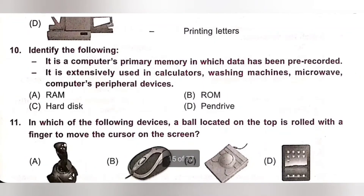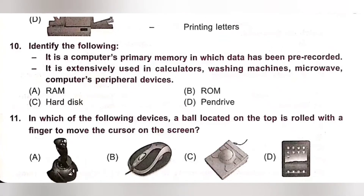Question 10: Identify the following. It is a computer's primary memory in which data has been pre-recorded. It is extensively used in calculators, washing machines, microwaves, and computer peripheral devices. Options: A. RAM, B. ROM, C. Hard disk, D. Pen drive. ROM retains its contents even when the computer is turned off — it is a non-volatile memory. Personal computers contain ROM that stores critical programs such as the boot program. Option B, ROM, is the correct answer.